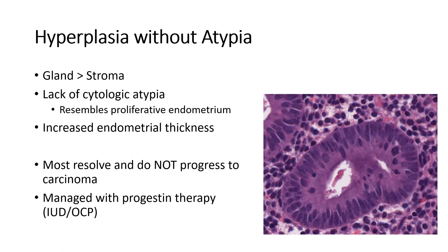In summary, the key here is that although hyperplastic, this proliferation lacks cytologic atypia. If you look at each gland at higher power, it resembles essentially proliferative endometrium — pseudostratified nuclei and some mitoses, but no atypia. Usually there's an increased amount of endometrial tissue overall, and this is typically a diffuse process because the estrogenic effect hits the whole endometrium. Most of the time this resolves and does not progress to carcinoma, and it's managed conservatively with progestin therapy.